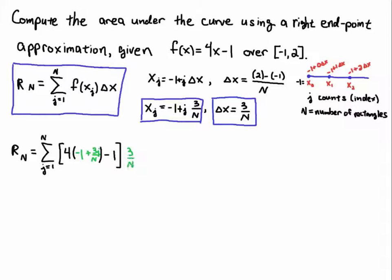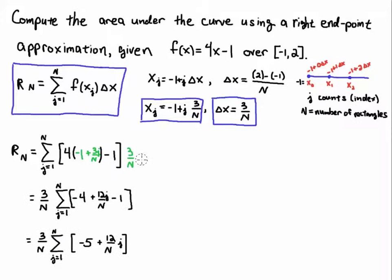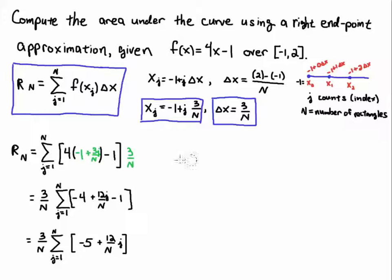In the next step I'm going to factor out the three over n. Remember, j is doing the counting but there's no j in the three over n, so it appears in each term of the sum. From the distributive property we can factor that three over n out of the entire sum since it has no j in it.